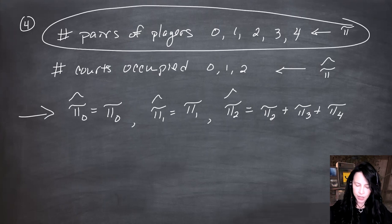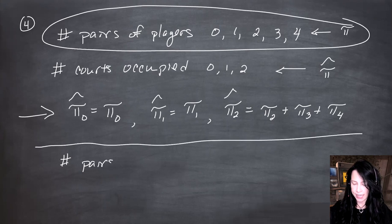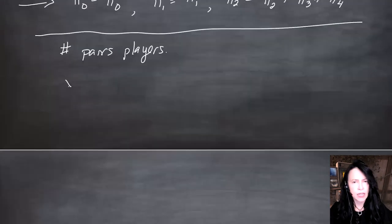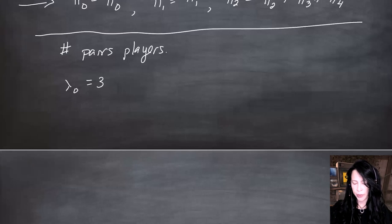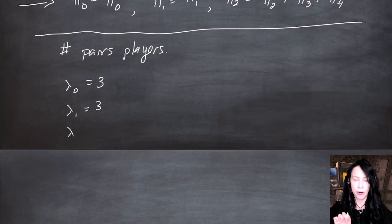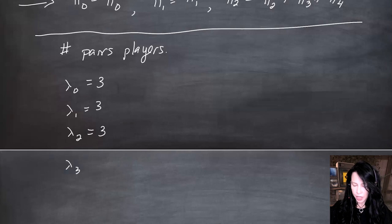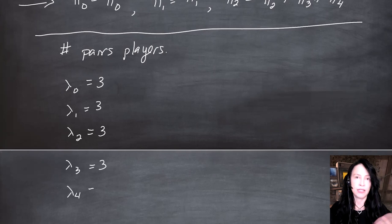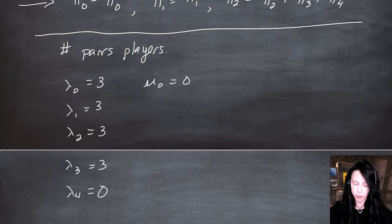You can treat the number of pairs of players as a birth and death process. People always arrive at rate three, regardless of whether there are zero, one, two, or three pairs in the system. But if there are four pairs, no one else can arrive, so the arrival rate becomes zero. If there's no one in the system, the death rate is zero — there's no one there to depart.